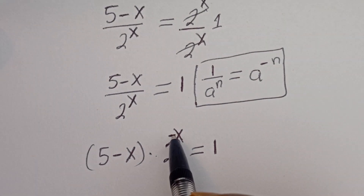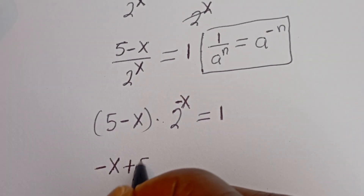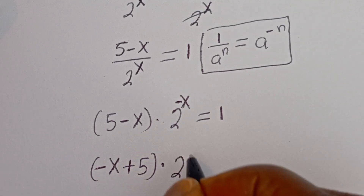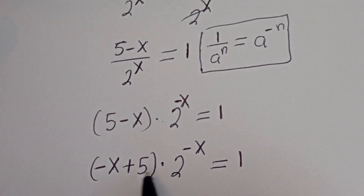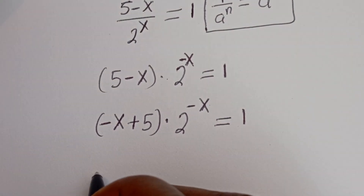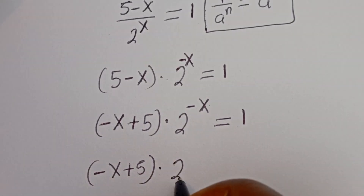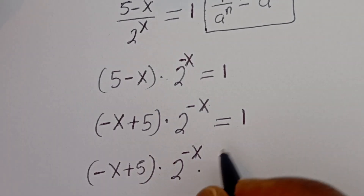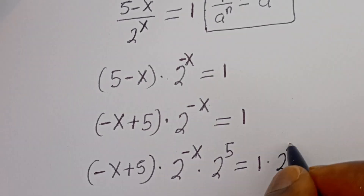Now in order to match the Lambert W form, we rewrite this as minus x plus 5 multiplied by 2 to the power of minus x is equal to 1. Here we have minus x in the base power, but we need to add 5 to that power. So let's multiply both sides of this equation by 2 to the power of 5. We have minus x plus 5 multiplied by 2 to the power of minus x multiplied by 2 to the power of 5 is equal to 1 multiplied by 2 to the power of 5.